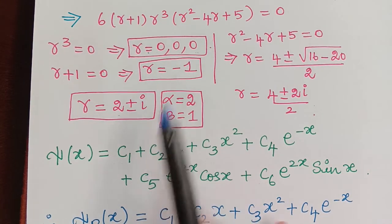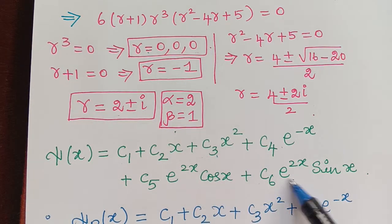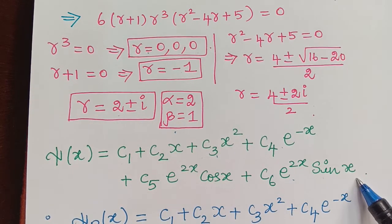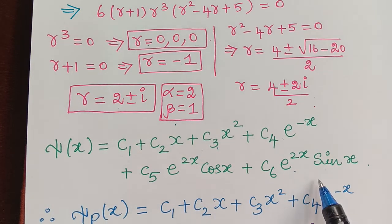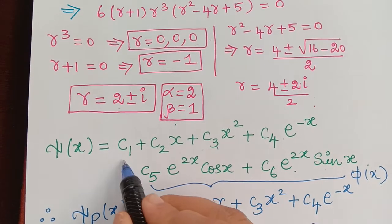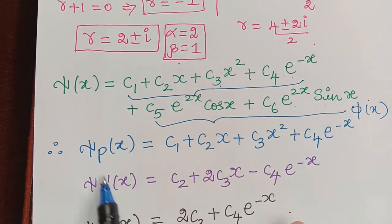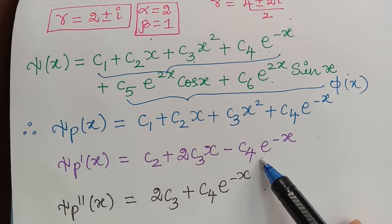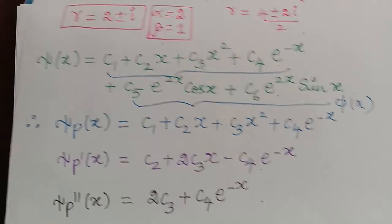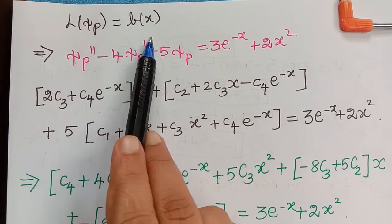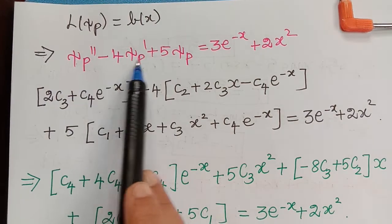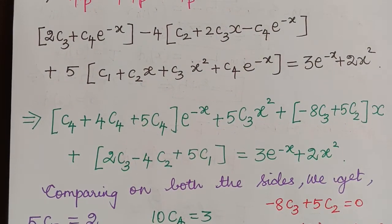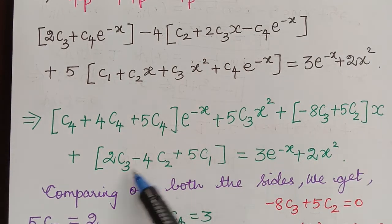The solution ξ(x) consists of: terms for the three roots R = 0, a term for root R = -1, and two terms for roots R = 2 ± i where alpha = 2 and beta = 1. From this, the complementary solution φ(x) is identified, and the particular solution ξp(x) is the remaining part. We compute ξp', ξp'', then substitute all three into L[ξp] = b(x) and simplify, gathering terms by e^(-x), x², x, and constants.